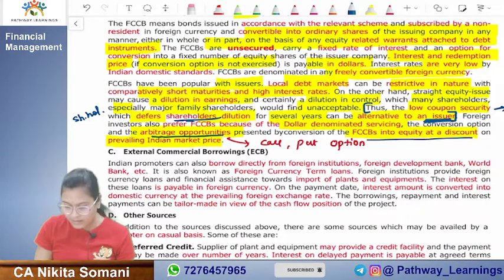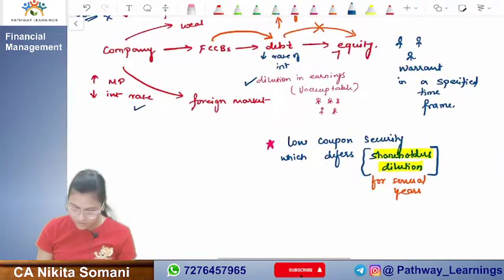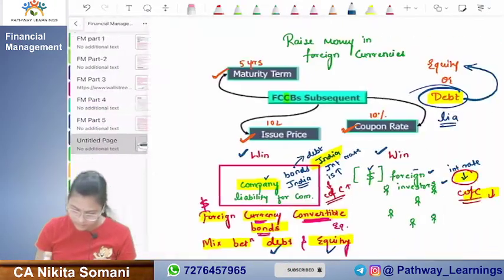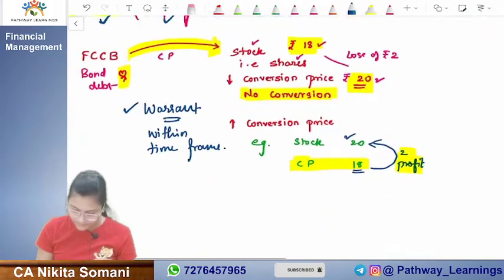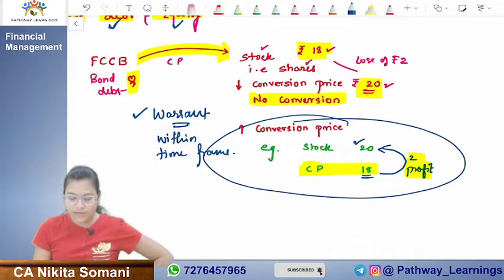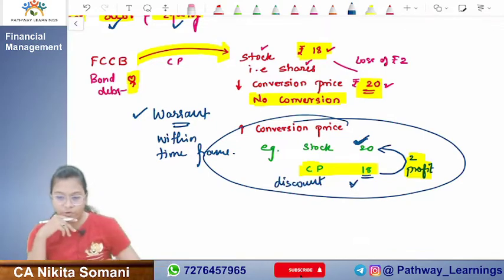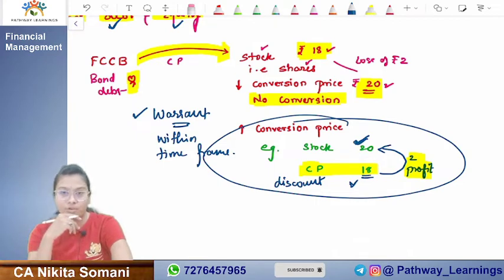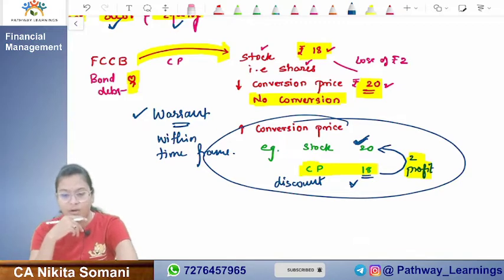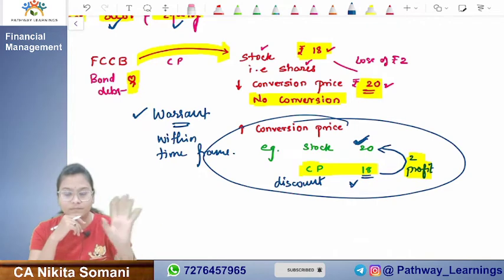Why is it said 'at a discount'? The share price is 20 rupees, but the conversion price is 18 rupees. Converting at 18 when the stock trades at 20 — that is getting equity at a discount to the prevailing Indian market price. That is the arbitrage opportunity. I hope the full concept is understood.